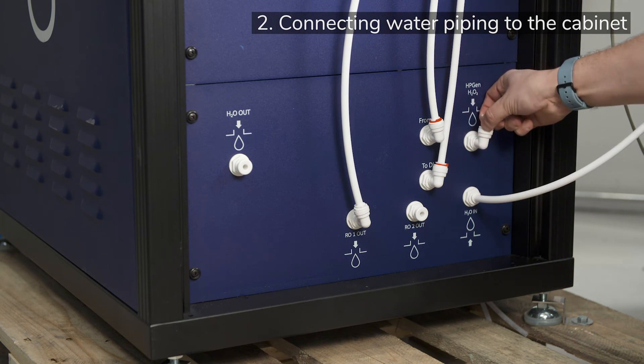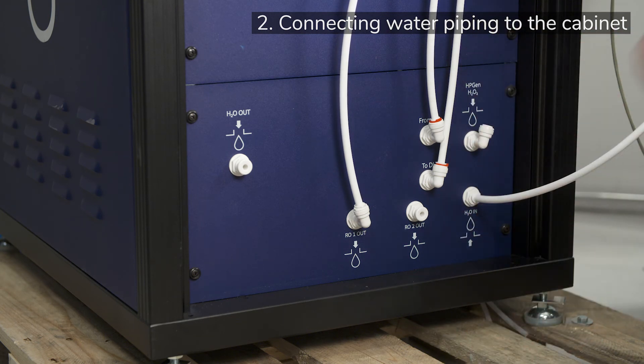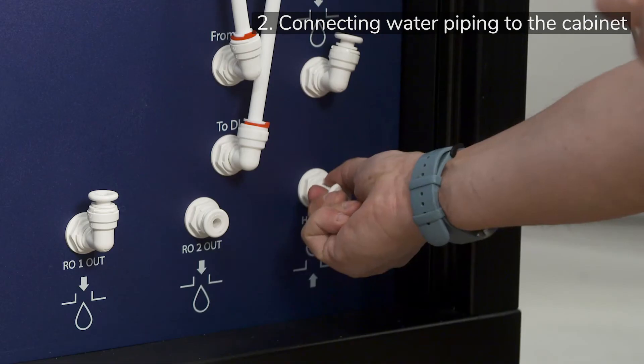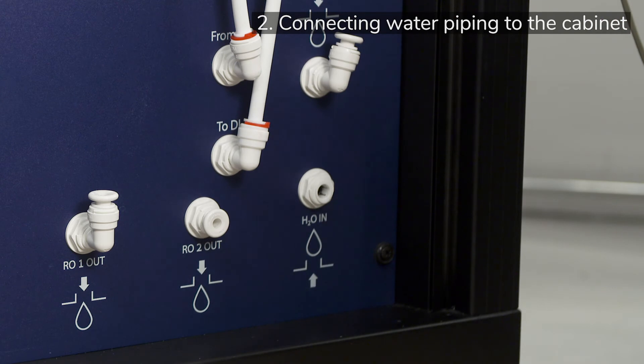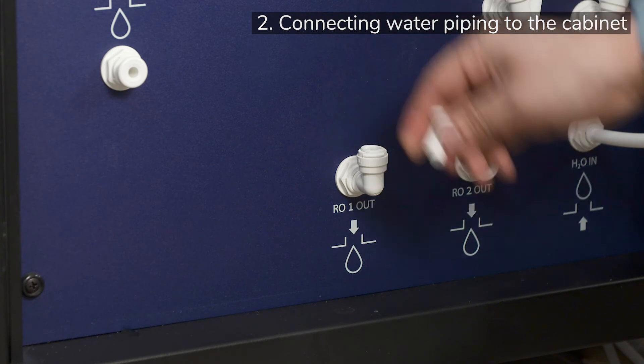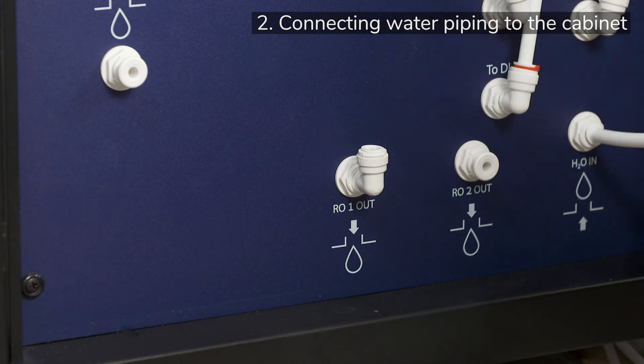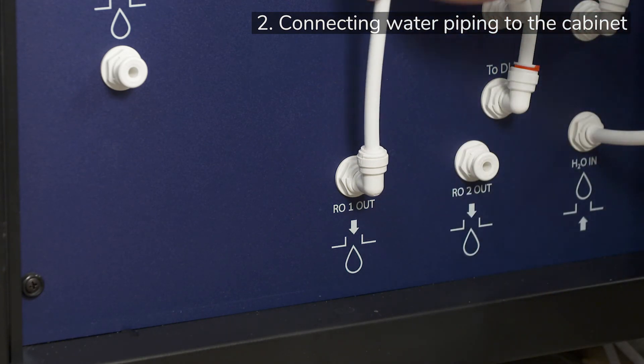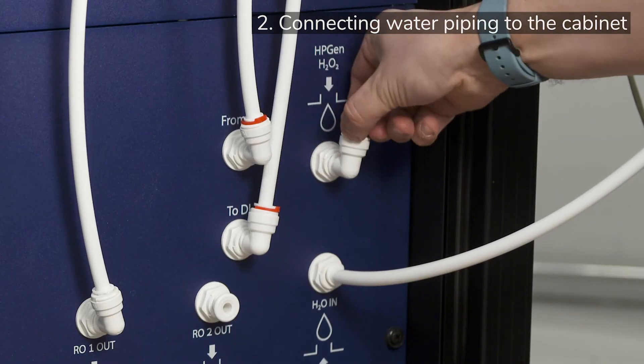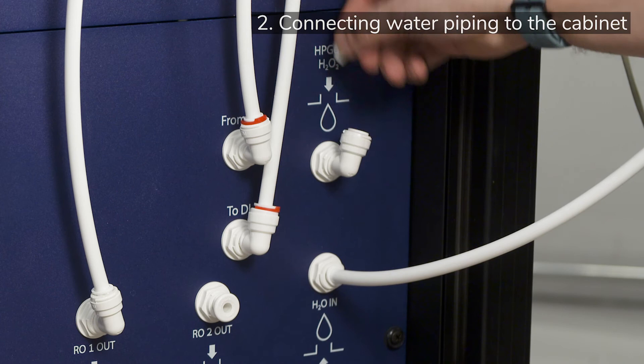To insert a tubing in the quick fitting, simply insert the tube all the way and check that it cannot be pulled out again. In the bottom right corner, connect your water source where it says H2O in. Next, connect tubing to the bottom left fitting, labelled RO1, which should be connected to a drain.